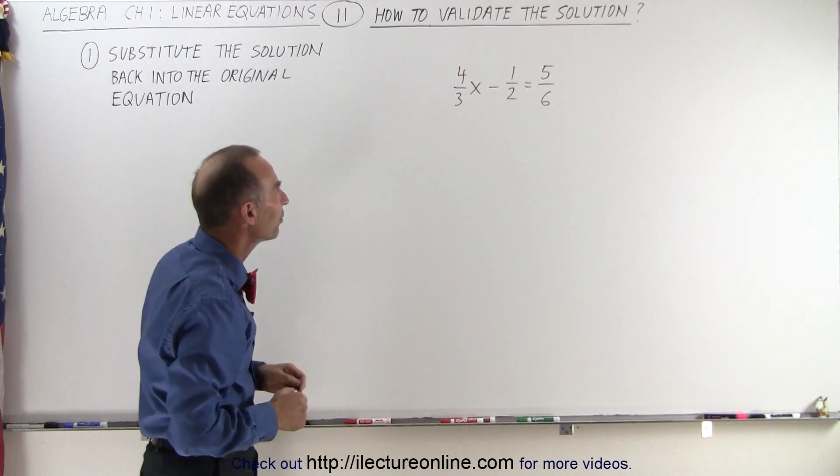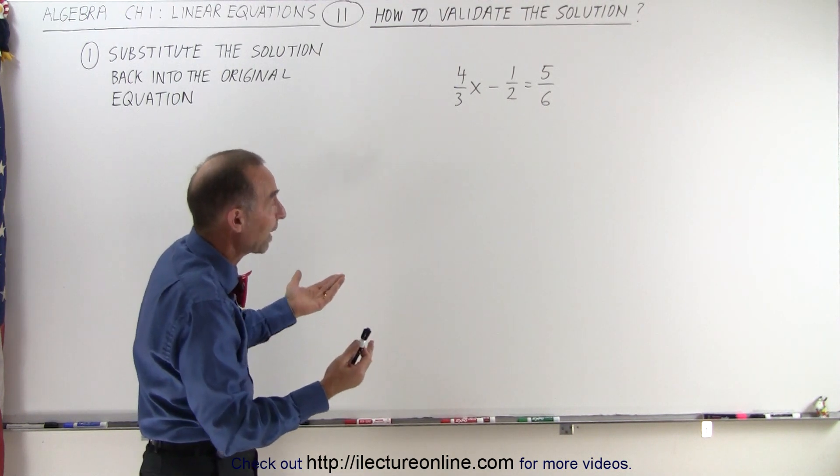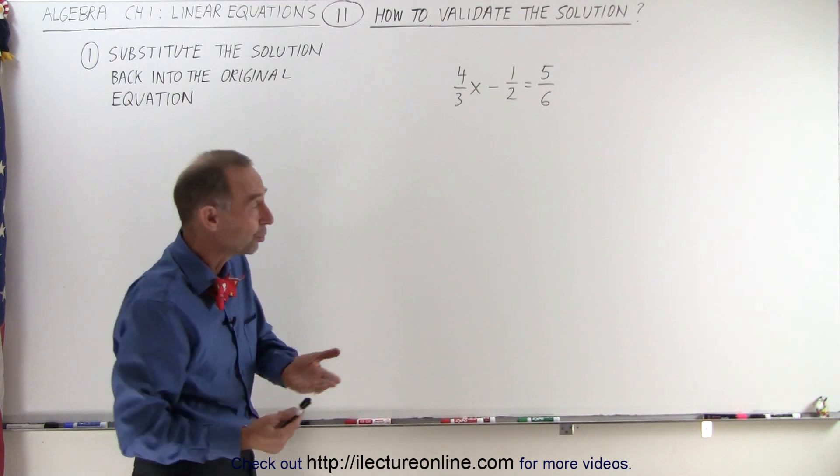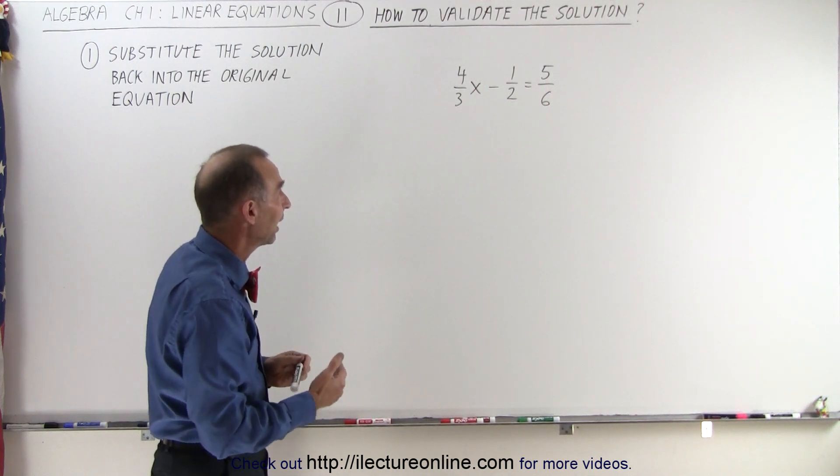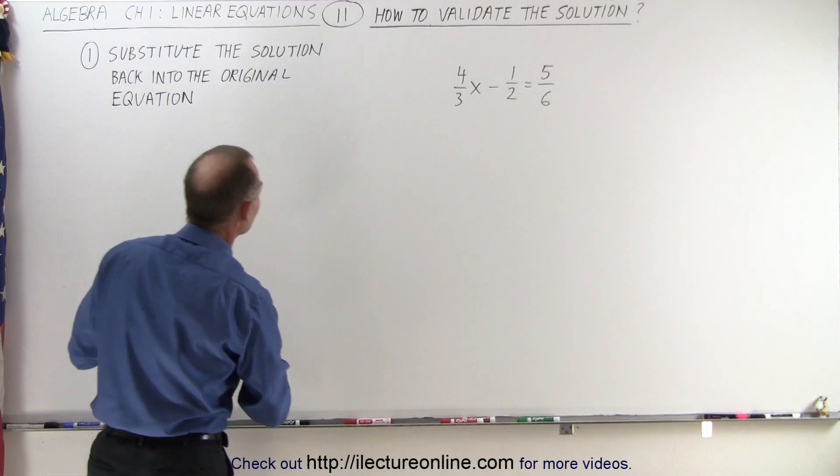So here let's try to solve this problem. First of all we realize we have fractions, so the first thing we should do is get rid of the fractions. And so what is the lowest common denominator here?